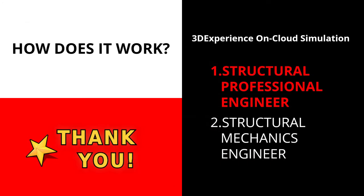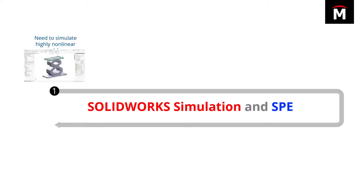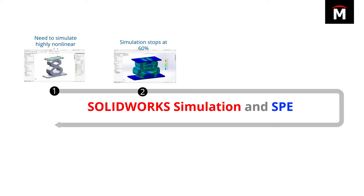Let's dig into how this actually works, starting with SPE or Structural Performance Engineer. SOLIDWORKS parts and assemblies, materials, and even the study setup can be transferred to SPE or SME using the 3DEXPERIENCE simulation connector add-in from within SOLIDWORKS. In this rubber bumper example, the study is first set up in SOLIDWORKS Simulation Premium. Due to the highly nonlinear nature of this study — because of nonlinearities in the material, high deformation, and changing contact conditions — the simulation is only able to make it through about 60% of the study before stopping.